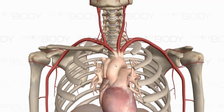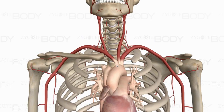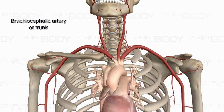Once we get up to the arch, the first major branch coming off is going to be the brachiocephalic artery, or brachiocephalic trunk. You don't have to say right or left in this case because there is only one brachiocephalic artery. In the veins there are two — a right and a left brachiocephalic vein — but as far as arteries go, there is only one brachiocephalic artery.